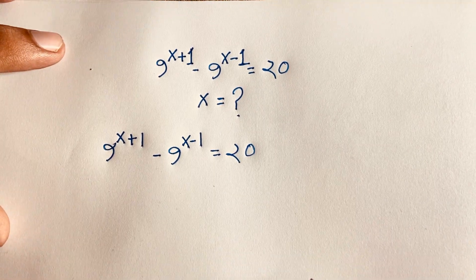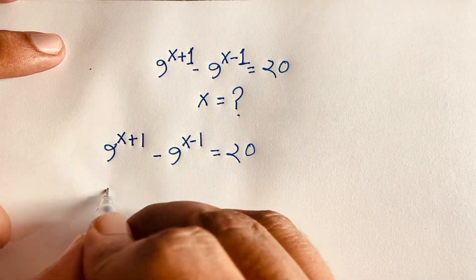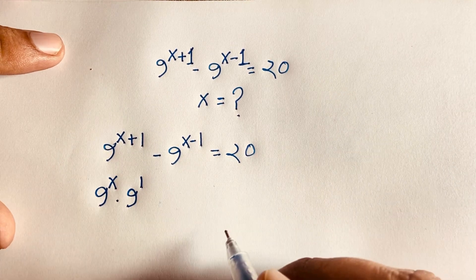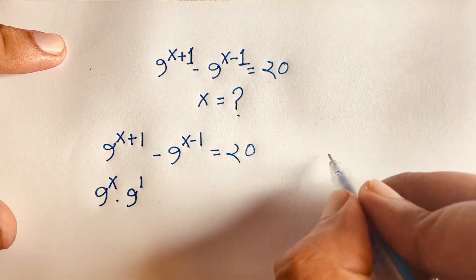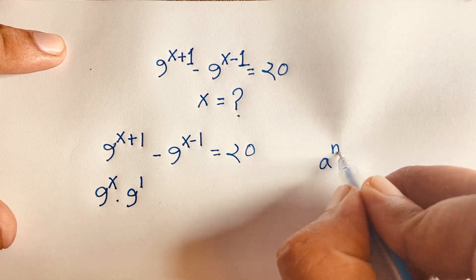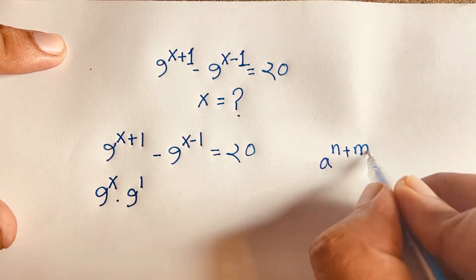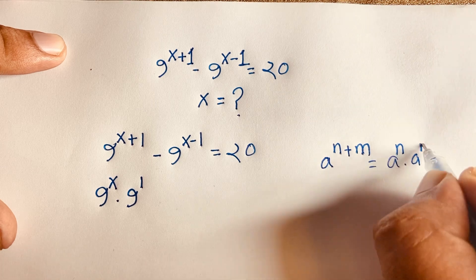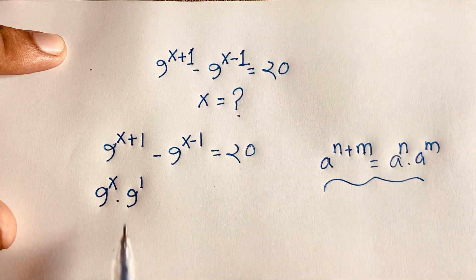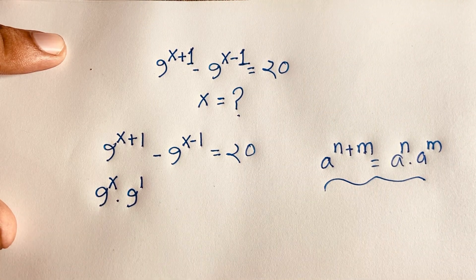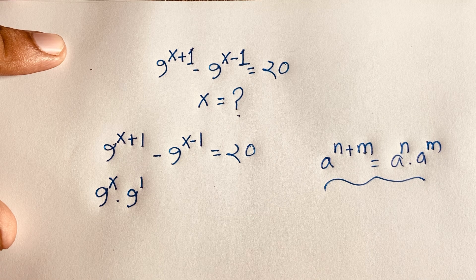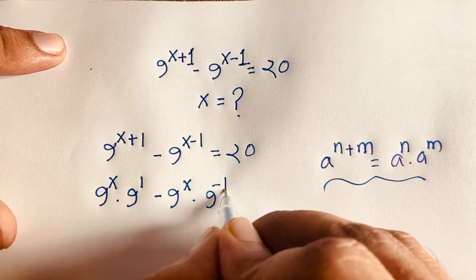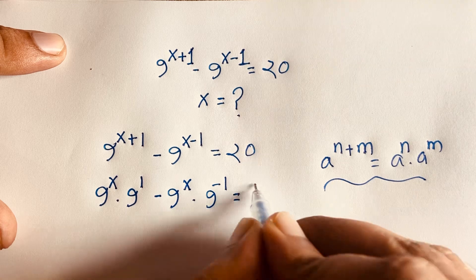In this expression, 9 to the power x plus 1 can be written as 9 to the power x times 9 to the power 1, according to exponential law: a to the power n plus m equals a to the power n times a to the power m. Similarly, 9 to the power x minus 1 becomes 9 to the power x times 9 to the power minus 1. So the equation is 9^x · 9 minus 9^x · 9^(−1) equals 20.